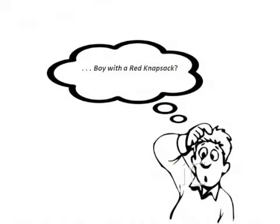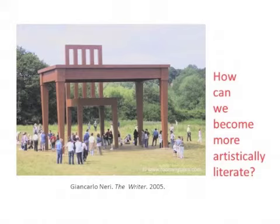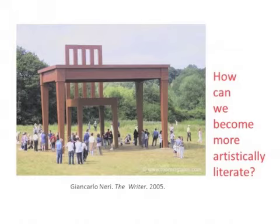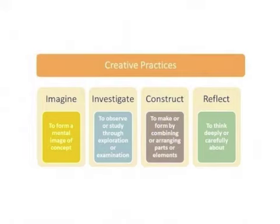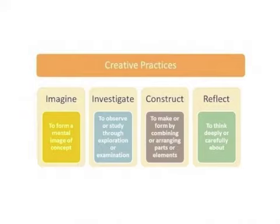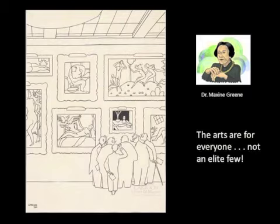Examples such as these call us to become more artistically literate. The Common Core Standards ask us to think of language literacy as a kind of connective tissue among content areas. I would argue that the arts have the potential to be equally, if not more, inclusive, extensive, and expansive. I'm not suggesting that we memorize facts or only offer interdisciplinary studies, but rather that we practice imagination, investigation, construction, and reflection within the arts disciplines and across other disciplines. As educators, we also need to bolster our commitment to the arts in our schools, at work, and at home. As the educational philosopher Dr. Maxine Greene reminds us, the arts are for everyone, not just an elite few.